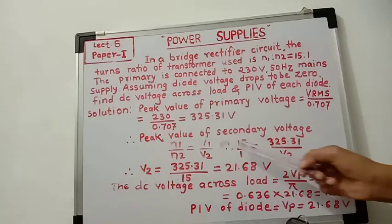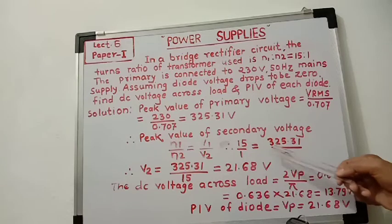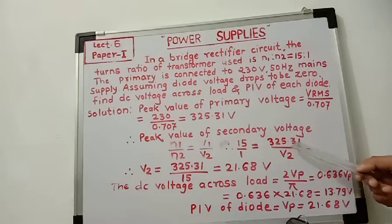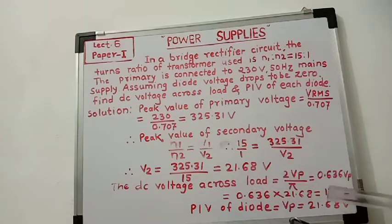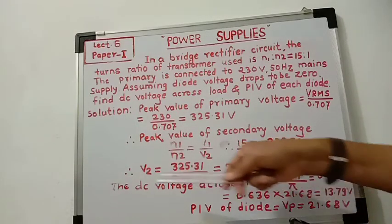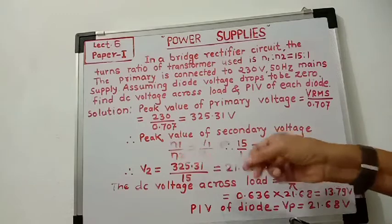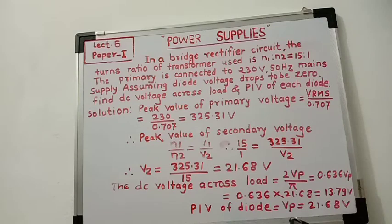Taking cross multiplication, 15 into V2 equals 325.31, which means V2 equals 325.31 divided by 15, and that is equal to 21.68 volts. So this is the peak secondary voltage V2. You can also use a log table: log of 325.31 minus log of 15, then take its anti-log to get the same result.